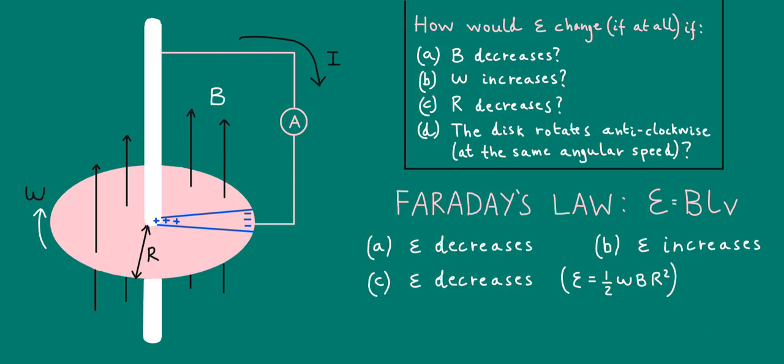For part D, if the disk rotates in the opposite direction but with the same angular speed, the only things that will change are the direction of the induced EMF and the direction of the induced current as well. You should be able to see this for yourself using Fleming's left hand rule. The magnitude of the induced EMF and current will be unaffected.